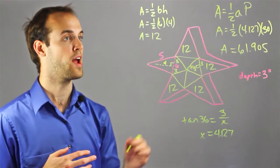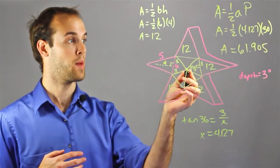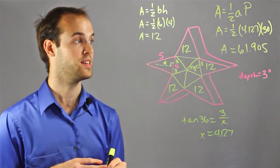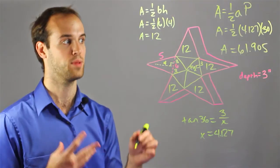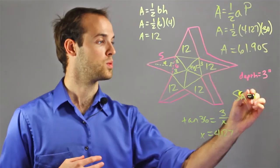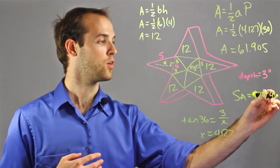And then, from there, I know that the area of all the triangles together was 60. The area of the pentagon is 61.905. So I know that this whole surface area of the star must be 61.905 plus 60, which is, so total surface area is equal to 121.905.